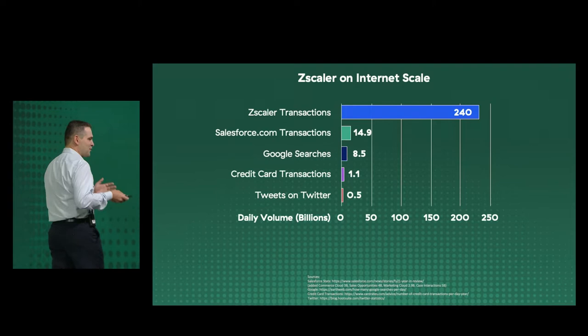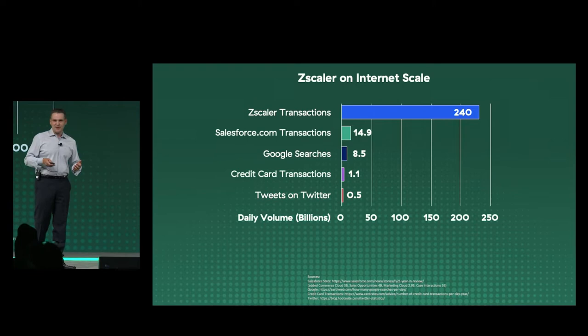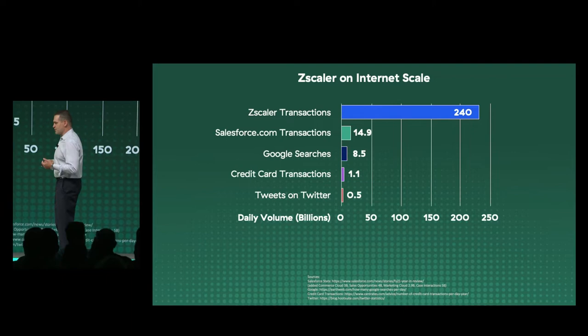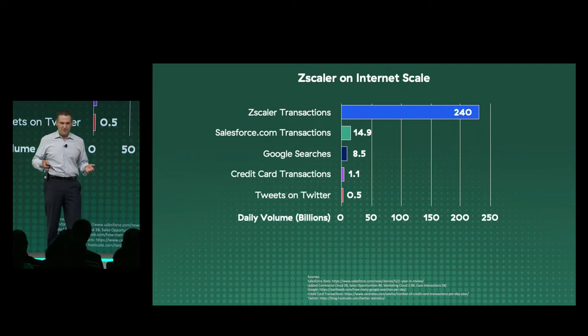You may ask how — why does Zscaler have more transactions than Google or whatever? Well, it's because tweets, Salesforce transactions, and credit card transactions go through Zscaler. And this is why the scale is what it is.